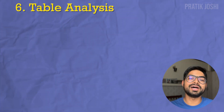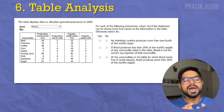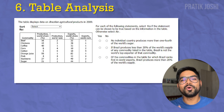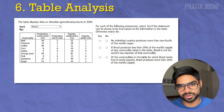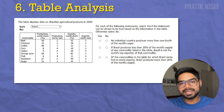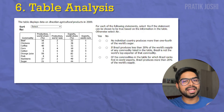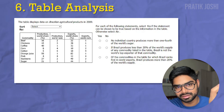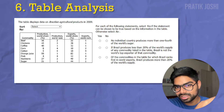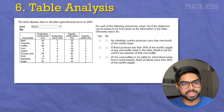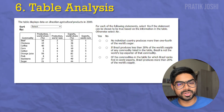Another type of question commonly found in this section is Table Analysis. Basically, data is represented in the form of a table and you need to select the sort column based on whatever question is asked. You need to sort that data in whatever arrangement you feel is necessary, understand the data, and answer the question accordingly.